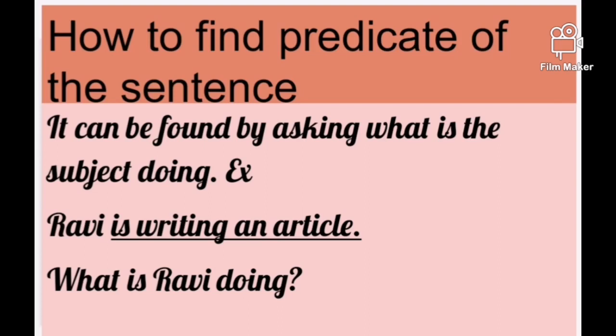'Ravi is writing an article' — what is Ravi doing? He is writing an article, so 'is writing an article' is the predicate. 'Birds fly' — what does the bird do? It flies, so fly is the predicate of the sentence.